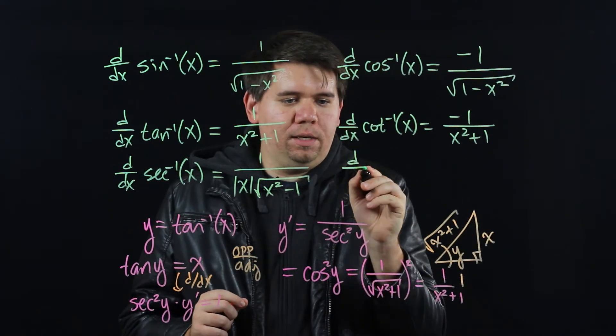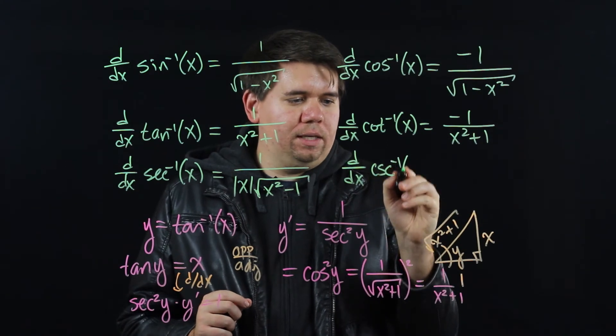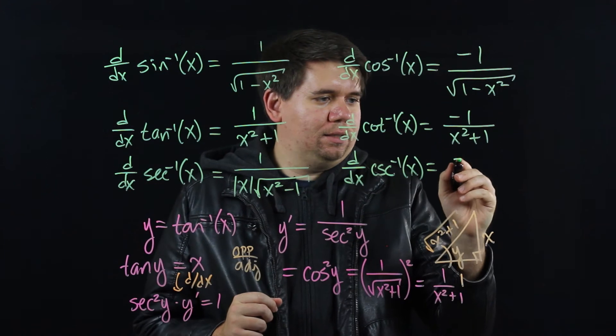And for cosecant, it's exactly the same. The derivative of cosecant inverse is exactly the same as for secant inverse, except it's minus. Negative 1 over the absolute value of x times the square root of x squared minus 1.